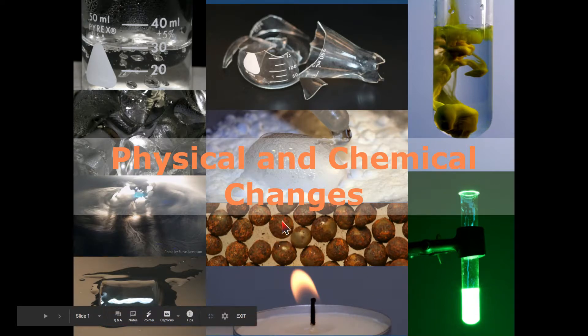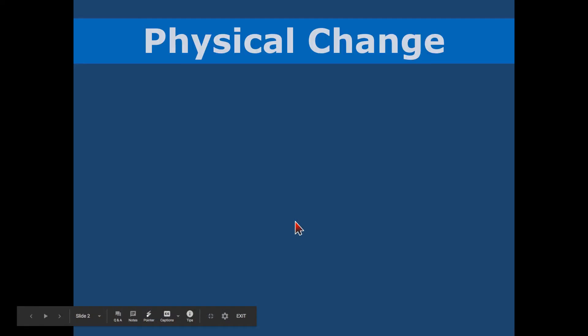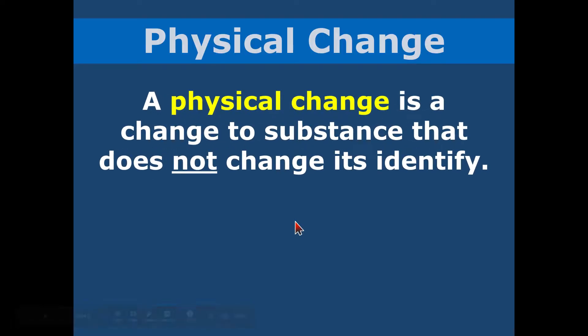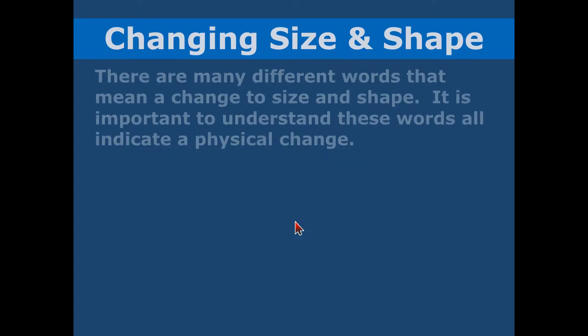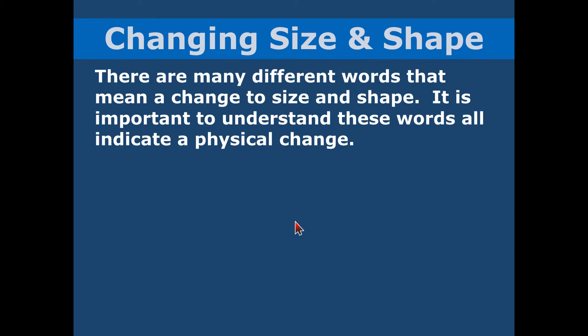Let's dive in. When we're looking at physical change, it is a change to a substance that does not change the identity. It changes the size, shape, or state of matter, but all of these are considered physical changes. It does not change the substance on a molecular level.